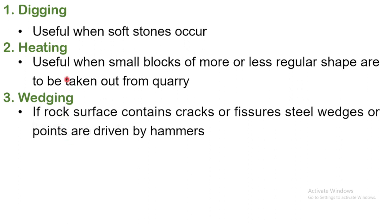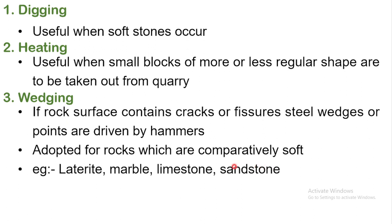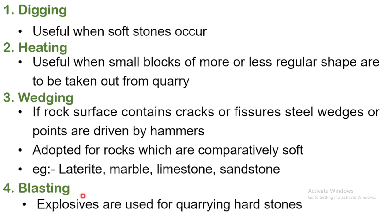We use wedging for stones such as laterite, marble, limestone, and sandstone. The third method is blasting — explosives are used for hard stones. Blasting produces small size stones, and is used for railways, concrete aggregate, and road metal.